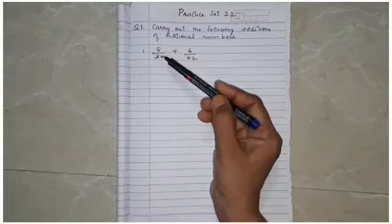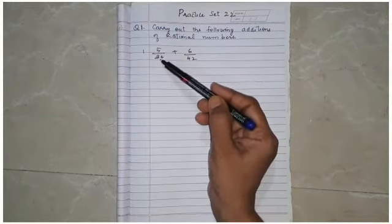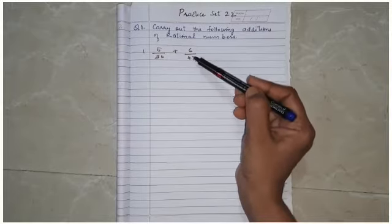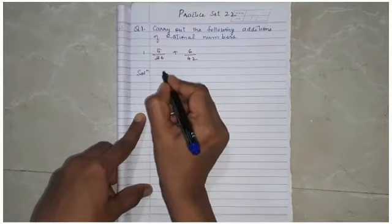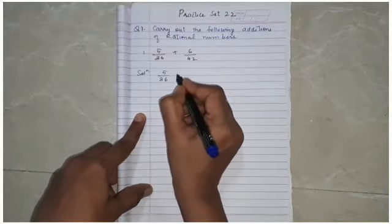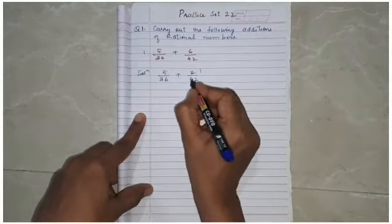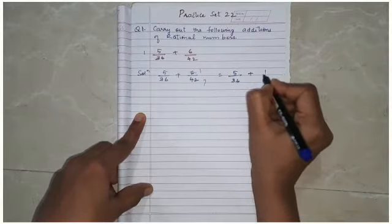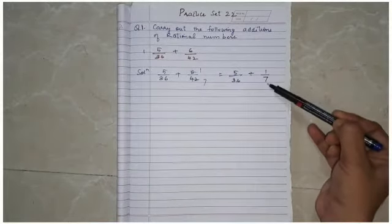We check the relation between the numbers: there is no relation between 5 and 36. But for 6 and 42 — in the 6 times table, 42 appears 7 times. So we can write 6/42 as 1/7. Thus: 5/36 + 6/42 becomes 5/36 + 1/7.